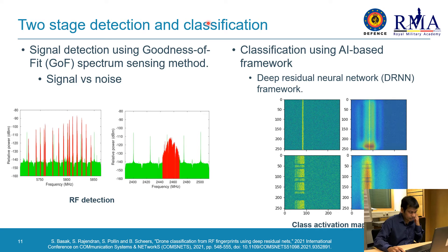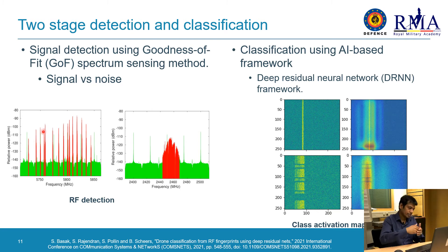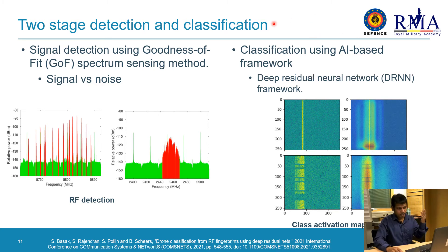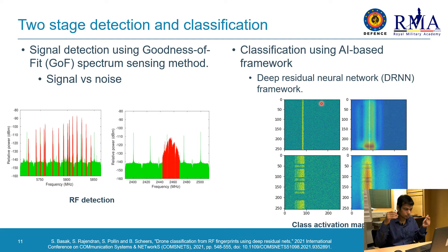We developed an AI-based drone detection and classification framework — a two-stage detection and classification system. At the first stage, we detect the signal using a goodness-of-fit based spectrum sensing method to determine whether there is a signal or noise. After detecting a signal, we pass it to the second stage: classification using an AI-based Deep Residual Neural Network. With the developed database, we train our framework and then evaluate whether our classifier can correctly classify signals. Overall, this model obtained very good results.